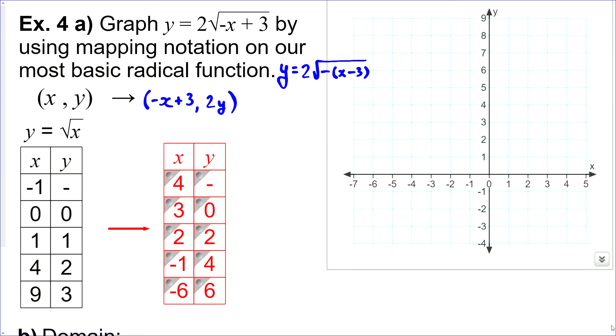So, again, nothing at 4. 3, 0 is where the graph starts. 2, 2. Negative 1, 4. And negative 6, 6. And we'll connect these points here. And I'll just use this as my label.